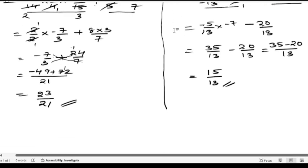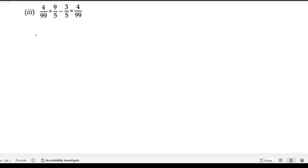Now let's do the third problem. We have: 4/99 × 9/5 - 3/5 × 4/99.